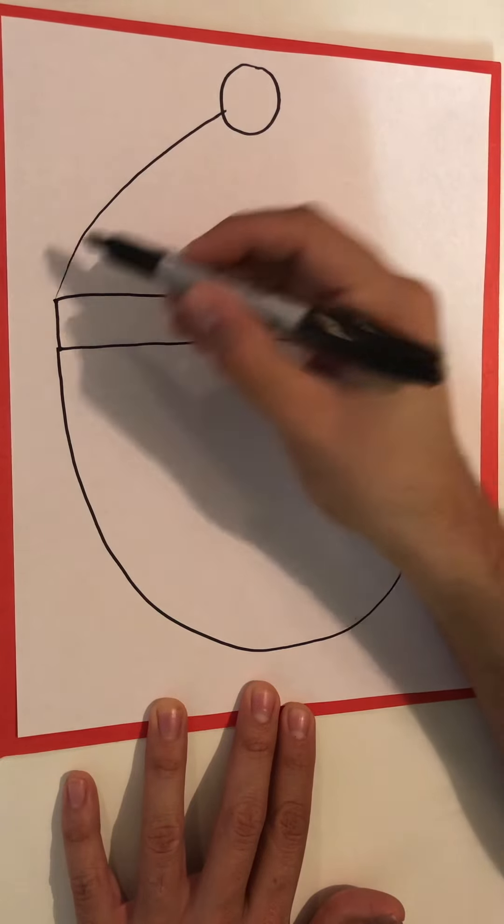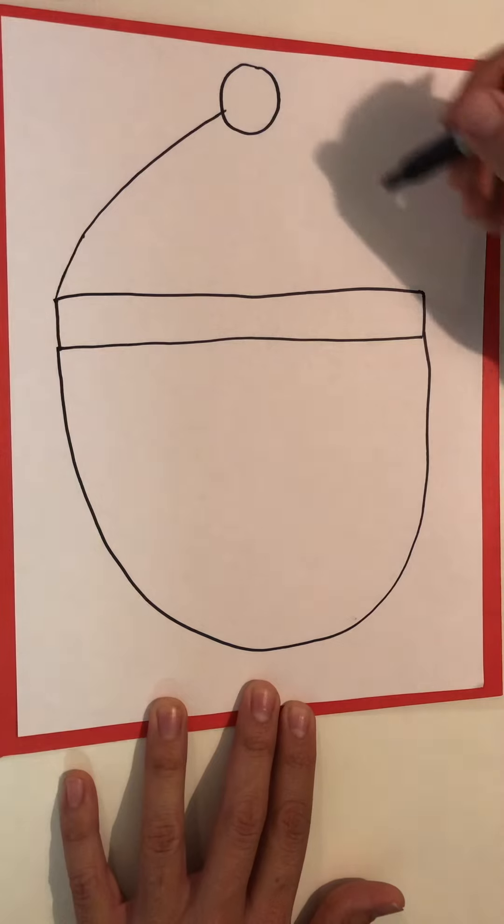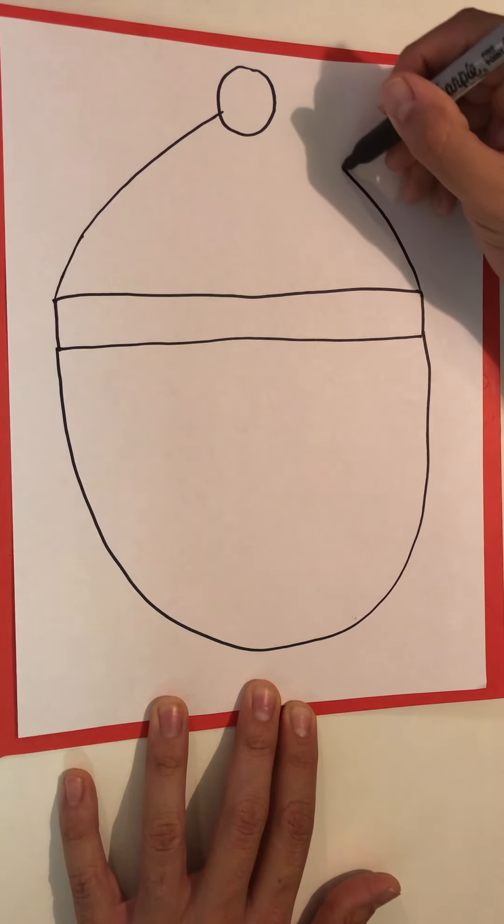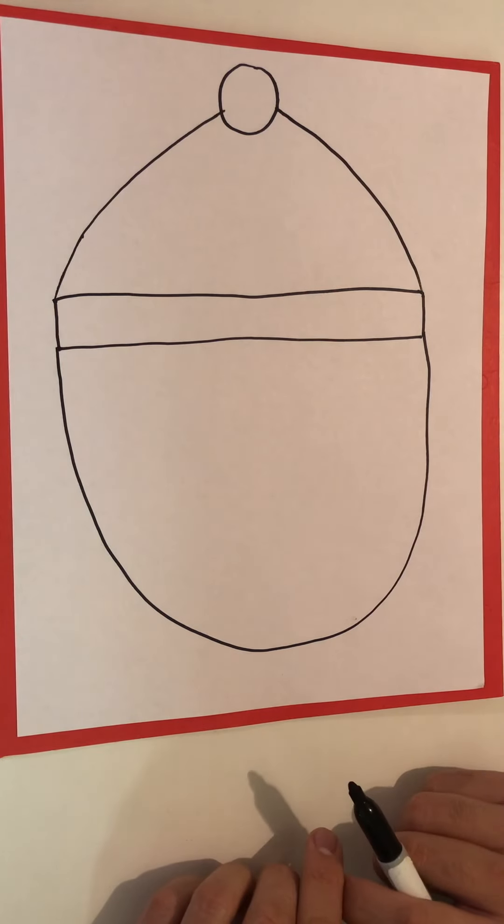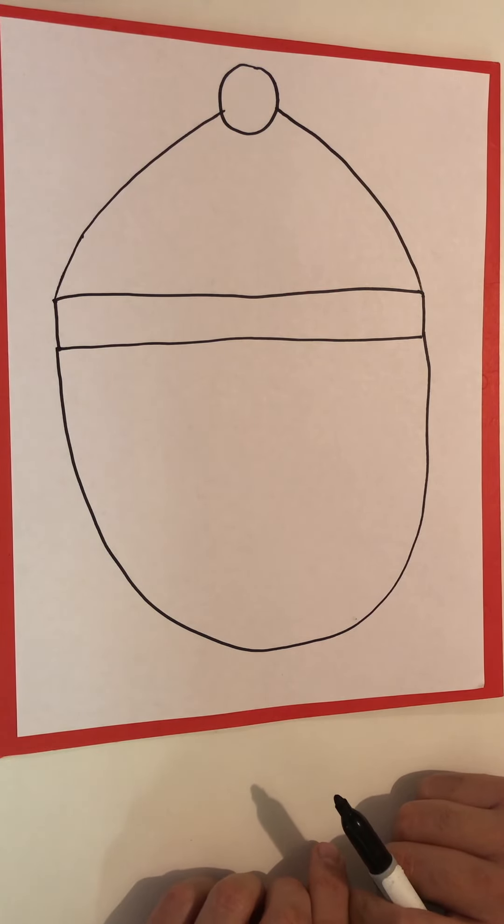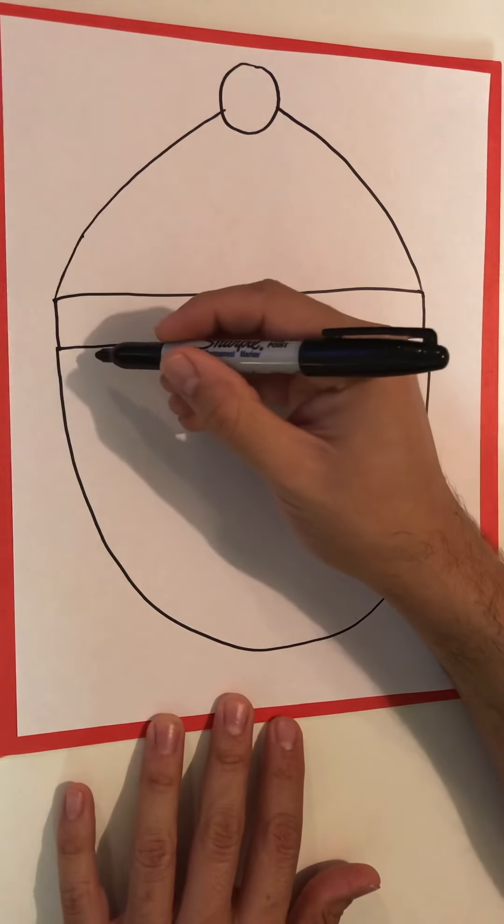We'll do the same thing over here on this side, from this edge all the way to the top just like that. Next, we're going to do another U-shape but a smaller U-shape.